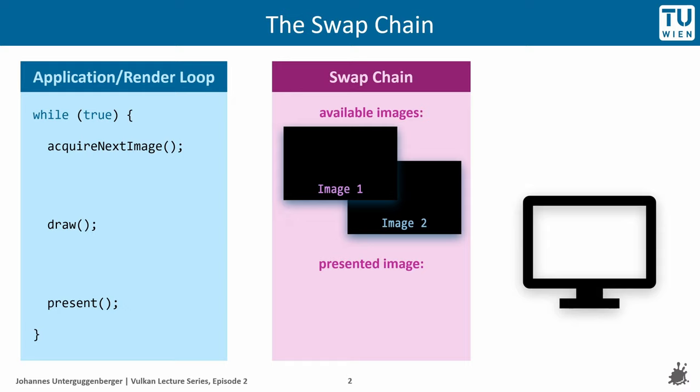A SwapChain provides a collection of images which we can use in our rendering application to draw into. As soon as we are done with drawing, we can hand it back to the SwapChain with the instruction that the images shall be presented, most commonly on the monitor attached to your PC. The SwapChain manages all the images, each of which is either currently presented, provided to an application, or just idling until it is requested by the application — such images are available. The left part represents an application that uses such a SwapChain.